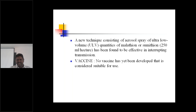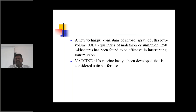For Chikungunya, till now, no vaccine has been developed that is considered suitable. Clinical trials are ongoing, but till now no vaccine is available for Chikungunya, and there is also no specific treatment. Only analgesics and antipyretics are available for treatment. Aspirin and steroids are contraindicated and should not be used for Chikungunya.